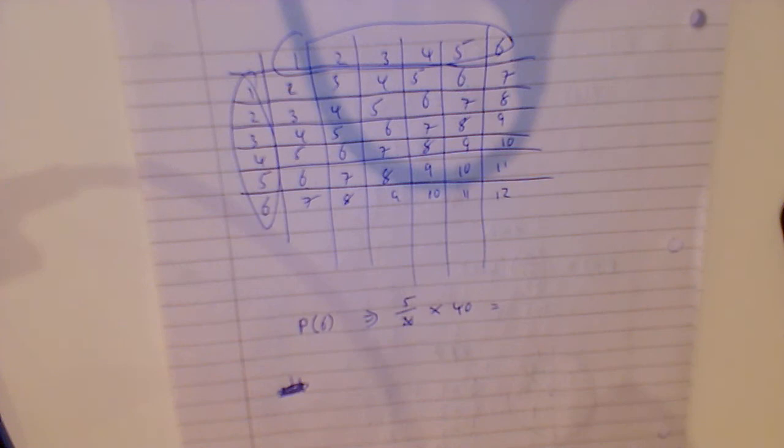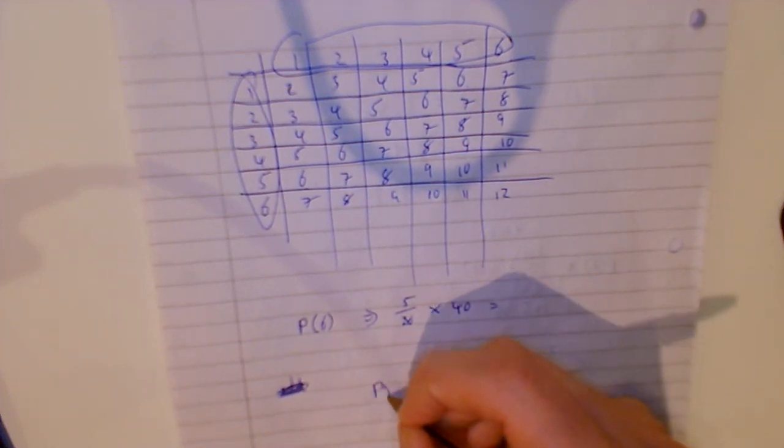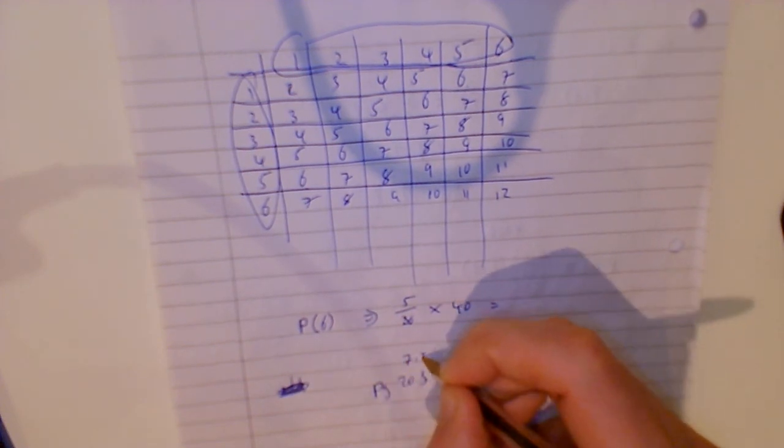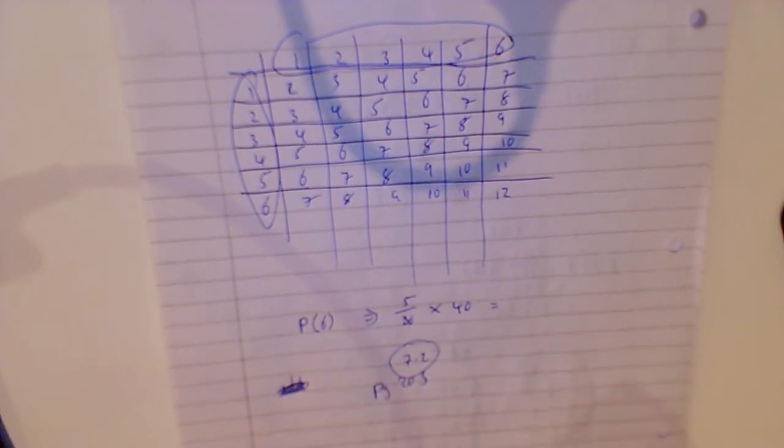So the questions that you're going to have for homework on this - it's on page 203, this is 7.2, problem 2. You're going to do question one all the way up to 17. Get as many of them done as possible, and see you in the next video.